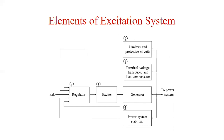First, the exciter: it provides DC power to the synchronous machine field winding, constituting the power stage of the excitation system. Second, the regulator: it processes and amplifies the input control signal to a level and form appropriate for control of the exciter. This includes both regulating and excitation system stabilizing functions, that is rate feedback or lead-lag compensation.